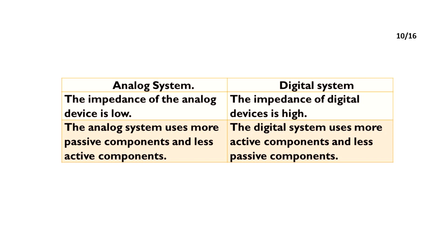The impedance of the analog device is low. The impedance of the digital device is high. The analog system uses more passive components and less active components. The digital system uses more active components and less passive components.